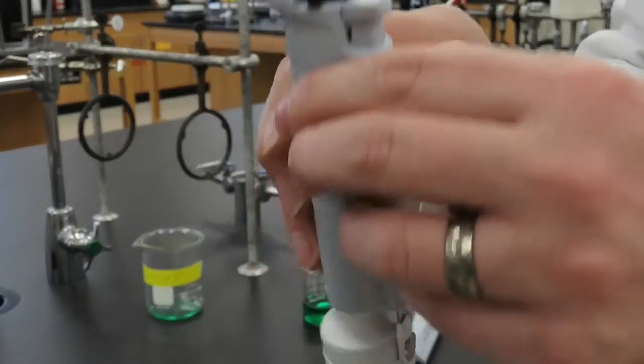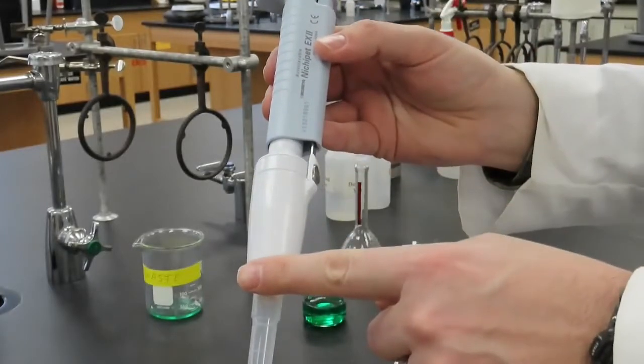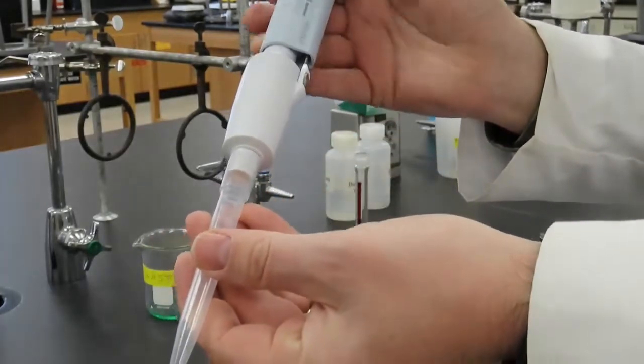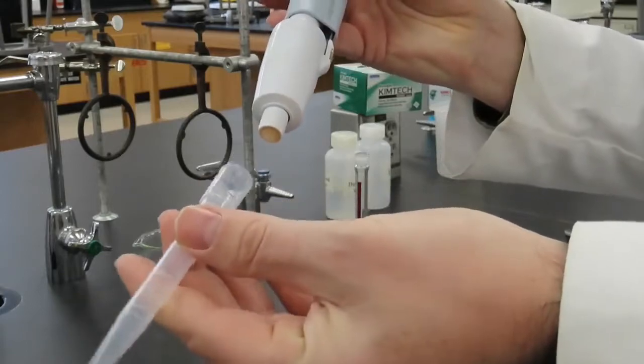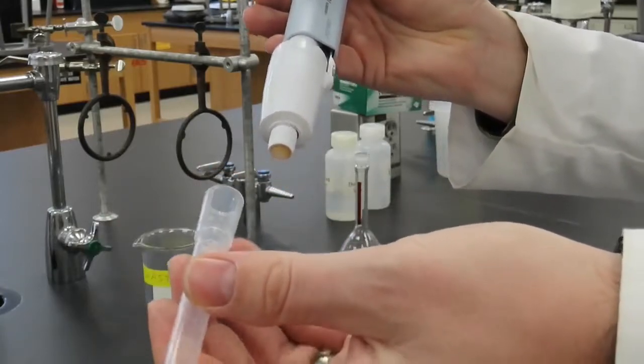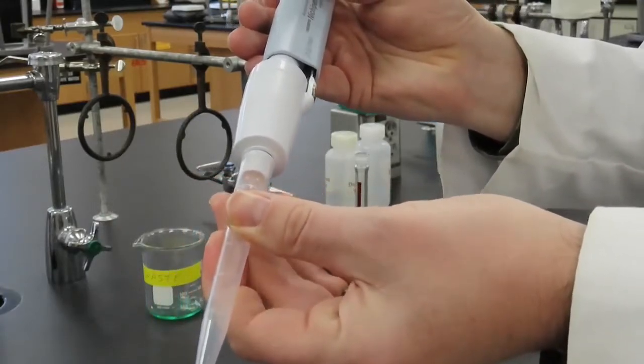Below the plunger is the micropipette shaft, and at the end is a removable and disposable tip. The tip size matches the micropipette size. The tip should fit comfortably onto the bottom of the shaft.